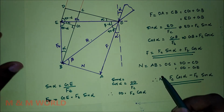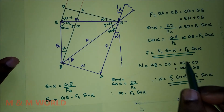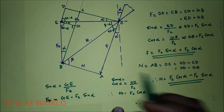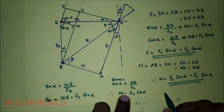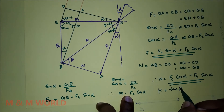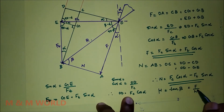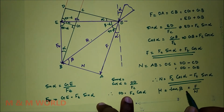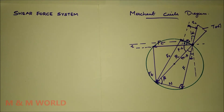So from this equation you will get the value of N, and from this equation you will get the value of F. This is the analytical method, which is more accurate than the graphical method. The coefficient of friction mu is equal to tan beta, which is equal to F divided by N, where beta is the friction angle.